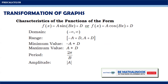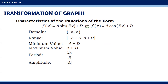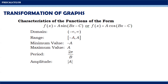The characteristics of functions of the form f(x) = a·sine(bx) + d or f(x) = a·cosine(bx) + d are: the domain is from negative infinity to positive infinity; the range is from (-a + d) to (a + d); the minimum value is -a + d and the maximum value is a + d; the period is 2π/b; and the amplitude is |a|. For functions of the form f(x) = a·sine(bx - c) or f(x) = a·cosine(bx - c): the domain is negative infinity to positive infinity; the range is -a to a; the minimum is -a; the maximum is a; the period is 2π/b; and the amplitude is |a|.